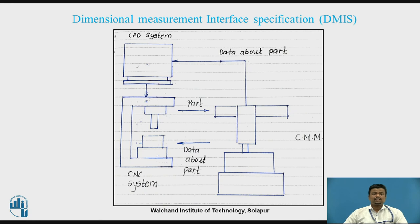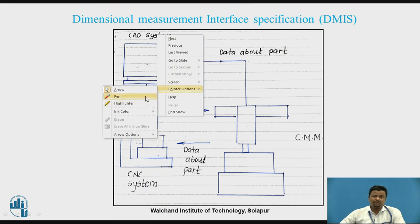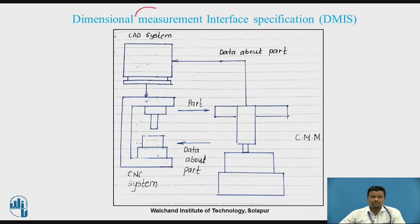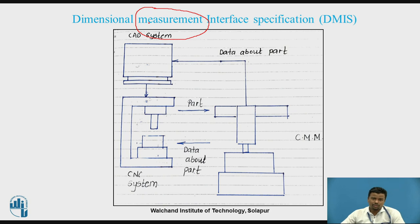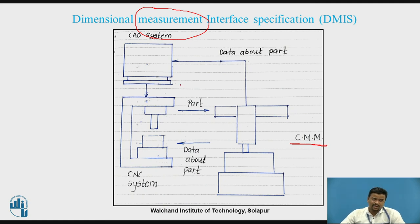The very important concept regarding Data Exchange Format is Dimensional Measurement Interface Specification, or DMIS. One very important word here is 'measurement.' This particular Data Exchange Format relates to automation components like CMM — Coordinate Measuring Machine — or machine vision. The CMM is connected to the CAD system.